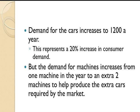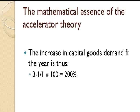Now, let's assume that demand for cars increases to 1,200 a year. This represents a 20% increase in consumer demand. But the demand for machines increases from one machine in a year to an extra two machines to help produce the extra cars required by the marketplace. The increase in capital goods demand goes from 1 to 3, which represents a 200% increase in capital goods demand for that year.